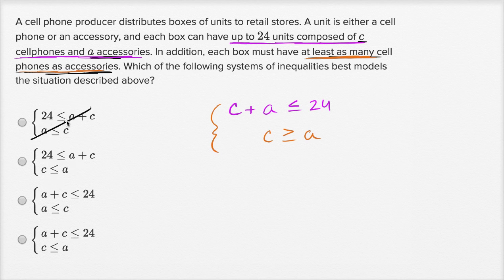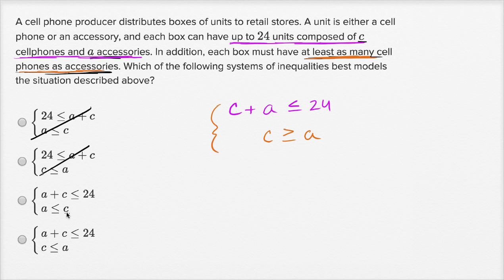This one also has 24 is less than or equal to A plus C, so we can rule that one out too. This one over here: A plus C is less than or equal to 24 — that's exactly what we have. They just swapped the A and the C. And then it has A is less than or equal to C, which is equivalent to saying C is greater than or equal to A. This is the same thing as saying A is less than or equal to C. So this is the choice I'd go with.